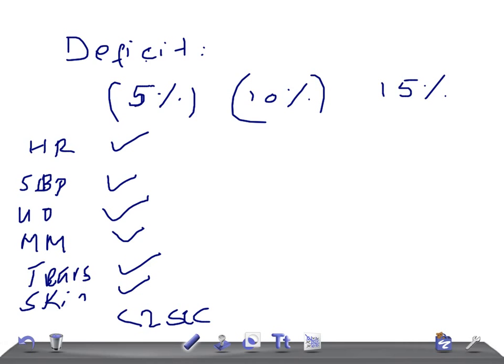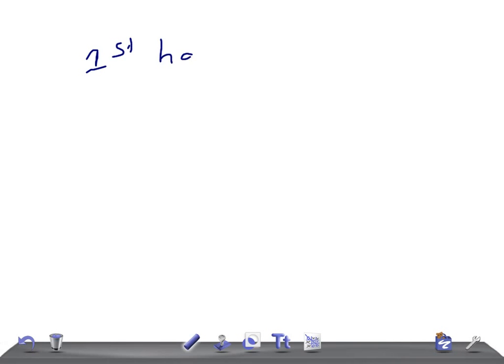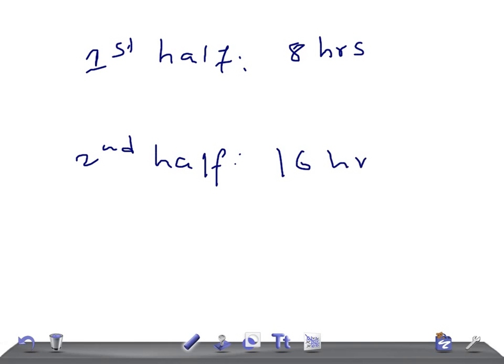To calculate the deficit, we divide it into two halves. The first half is given over 8 hours, and the second half is given over 16 hours. Whatever deficit we calculate for the patient, we divide it by two — first half in 8 hours, second half in 16 hours.